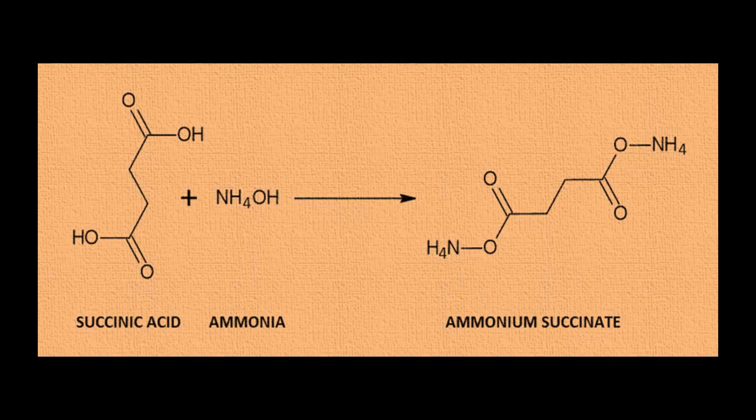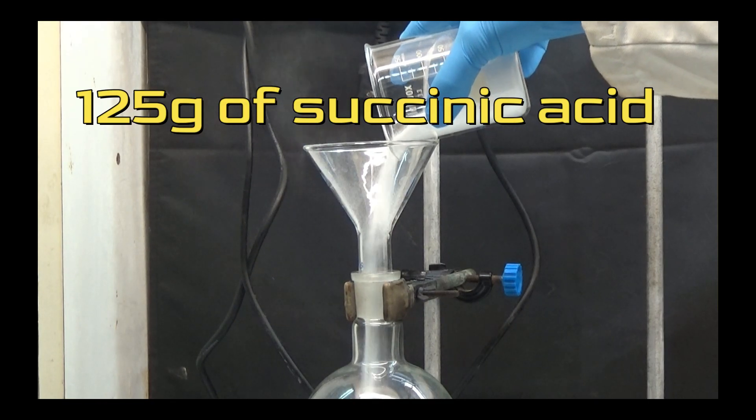To obtain succinamide, we will first form ammonium succinate. In a 500ml flask, we will put 125g of succinic acid.